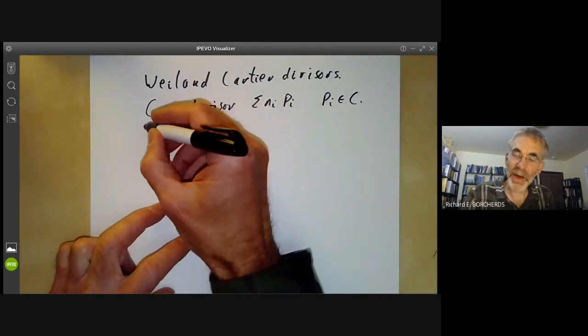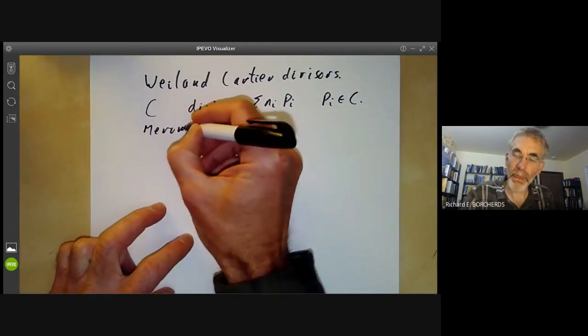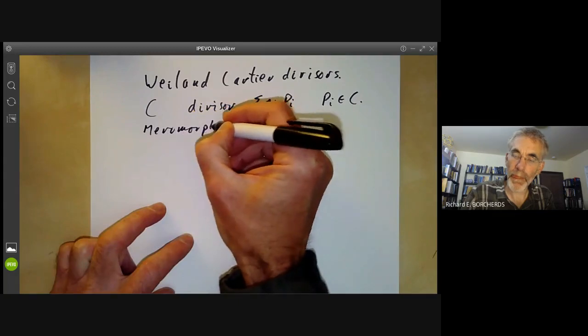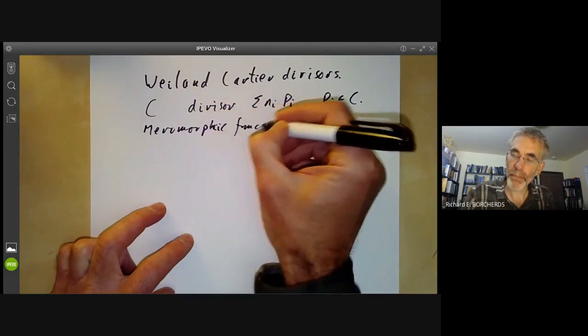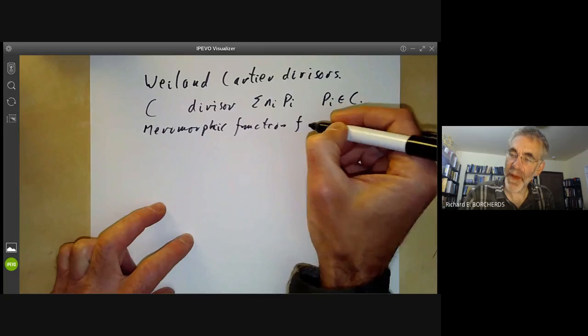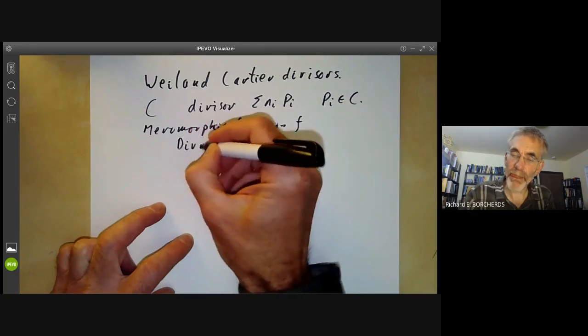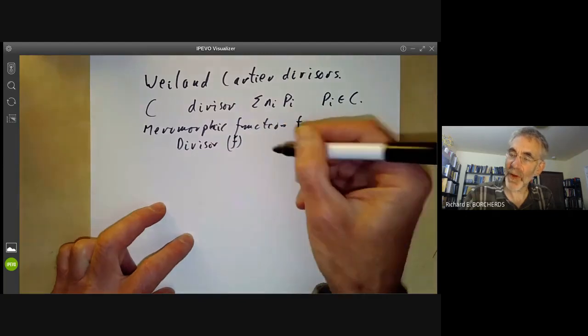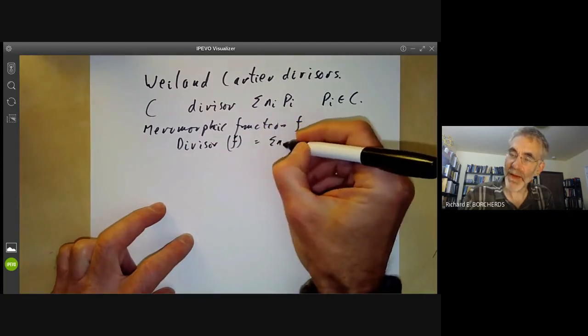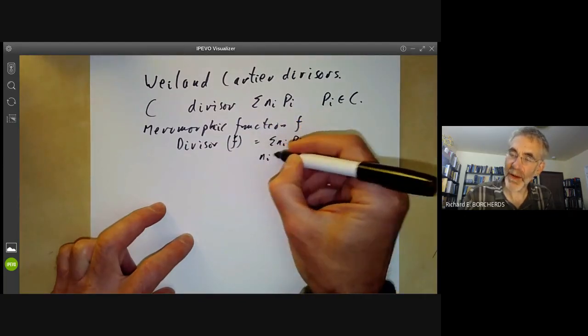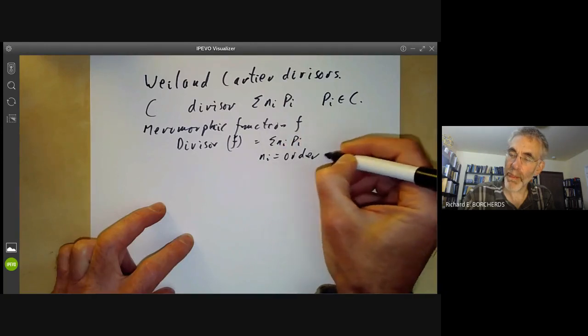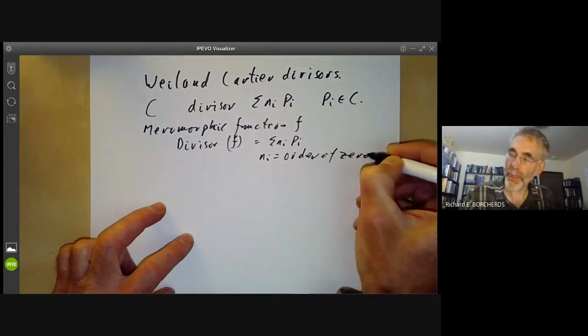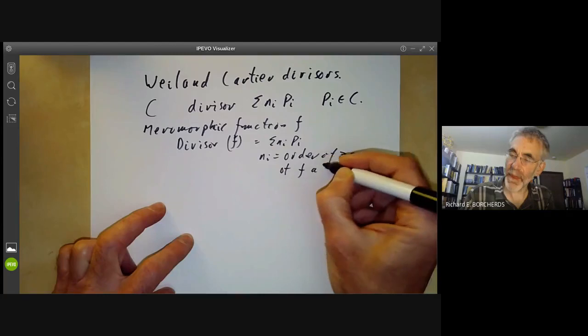And if we've got a meromorphic function f, then we have a divisor of f, which is given by sum of n_i p_i, where n_i is the order of zero of f at p_i.